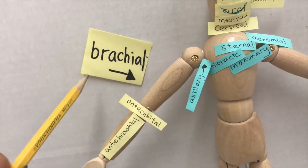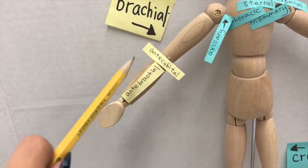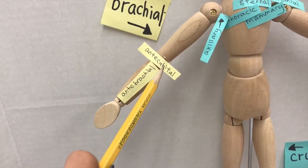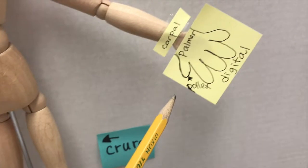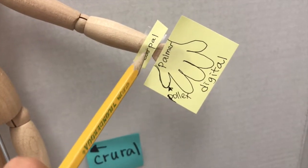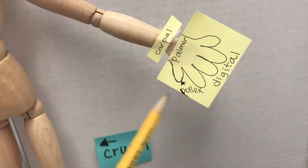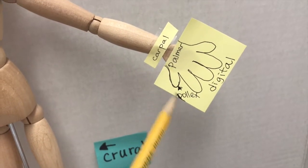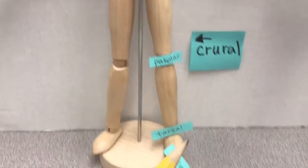Then we have brachial (arm), and we have antecubital (front elbow), and antebrachial (forearm). And then we have carpal (wrist). And then in the hand region, we have palmar (palm), and pollex (thumb), and digital (fingers), as well as toes.